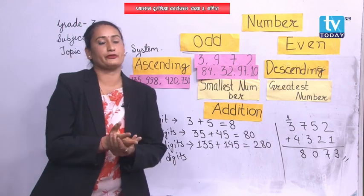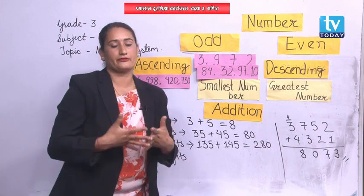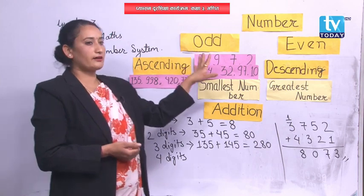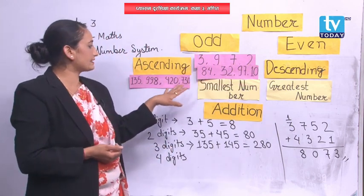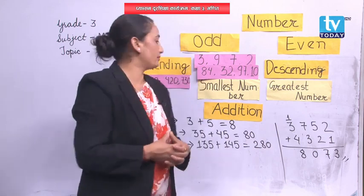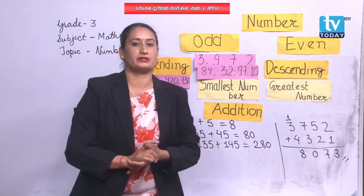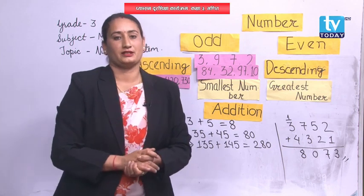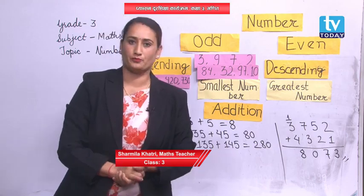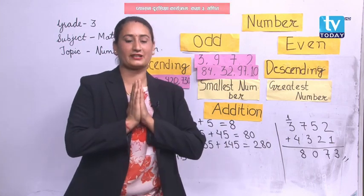Let's have a short review of the class. In numbers, we revised the previous class content. Then we did odd and even numbers. After that, ascending and descending order. Then finding the smallest and greatest numbers. And finally, a short review of addition. I have assigned some homework for you to do at home. This much for today — have a nice day and stay safe. Thank you so much.